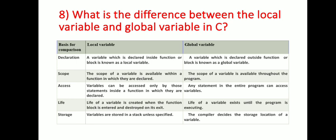A local variable can be accessed only by those statements inside the function in which it is declared. Any statement in the entire program can access the global variable. The life of a local variable is created when the function block is entered and destroyed on its exit.